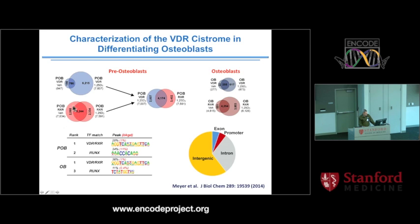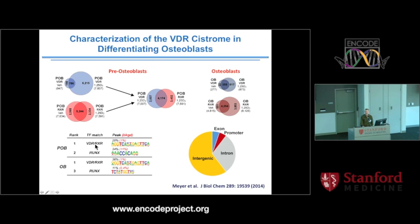When we looked at the RXR cistrome, it was actually much larger than that for the VDR. But importantly, about 60% of the vitamin D receptor sites co-localized with RXR, supporting the idea that RXR is a primary heterodimer partner. When we looked at the response elements via de novo examination of these binding sites, the most common element was an AGTCA duplex separated by three base pairs — consistent with the sequence we had identified in the first gene studied years ago.